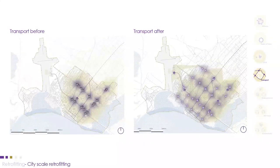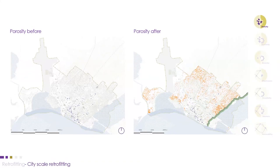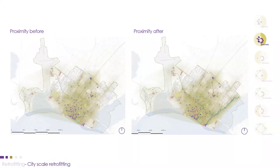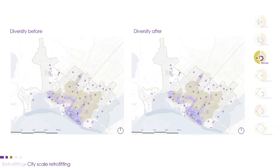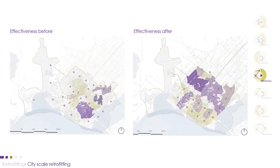The new transportation map shows newly added transport modes, and the city has better transportation coverage. Regarding porosity, the new map shows added levels across the city. The newly added type-of-uses along the city park and green belt improved the proximity map compared to the old one. The diversity map has a slight improvement but it's not clearly visible at this scale. The new effectiveness map clearly indicates increased efficiency of transportation coverage over existing volumes, shown in purple colors.